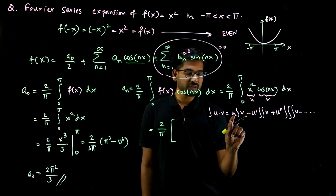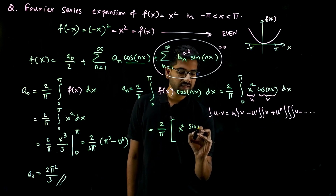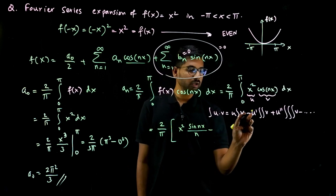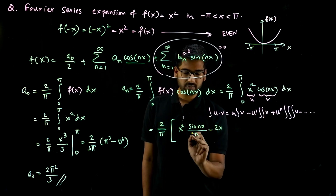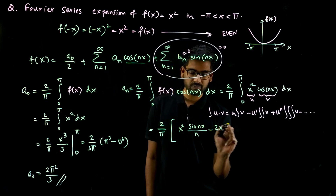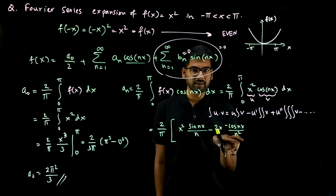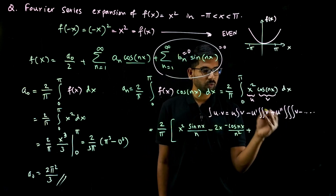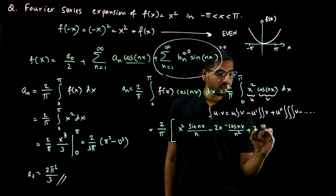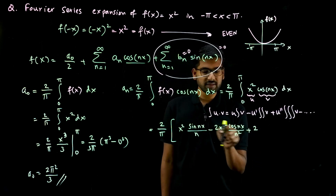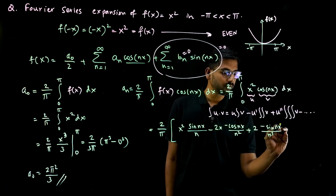Using this formula, with u equal to x squared and v equal to cos nx, we get: 2 by pi times the bracket — first term: x squared times sin nx over n; minus u prime which is 2x, times integration of sin nx which is minus cos nx over n, giving minus cos nx over n squared; plus u double prime which is 2, times integration of cos nx over n squared, which is sin nx over n cubed.